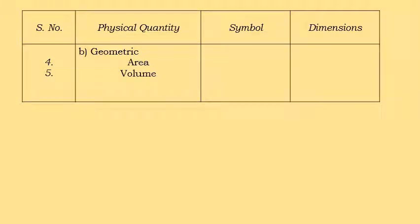For geometric quantities — area and volume — the symbols used are A for area and V for volume. The unit of area is meter squared, that is L squared. The unit of volume is meter cubed, that is L cubed.